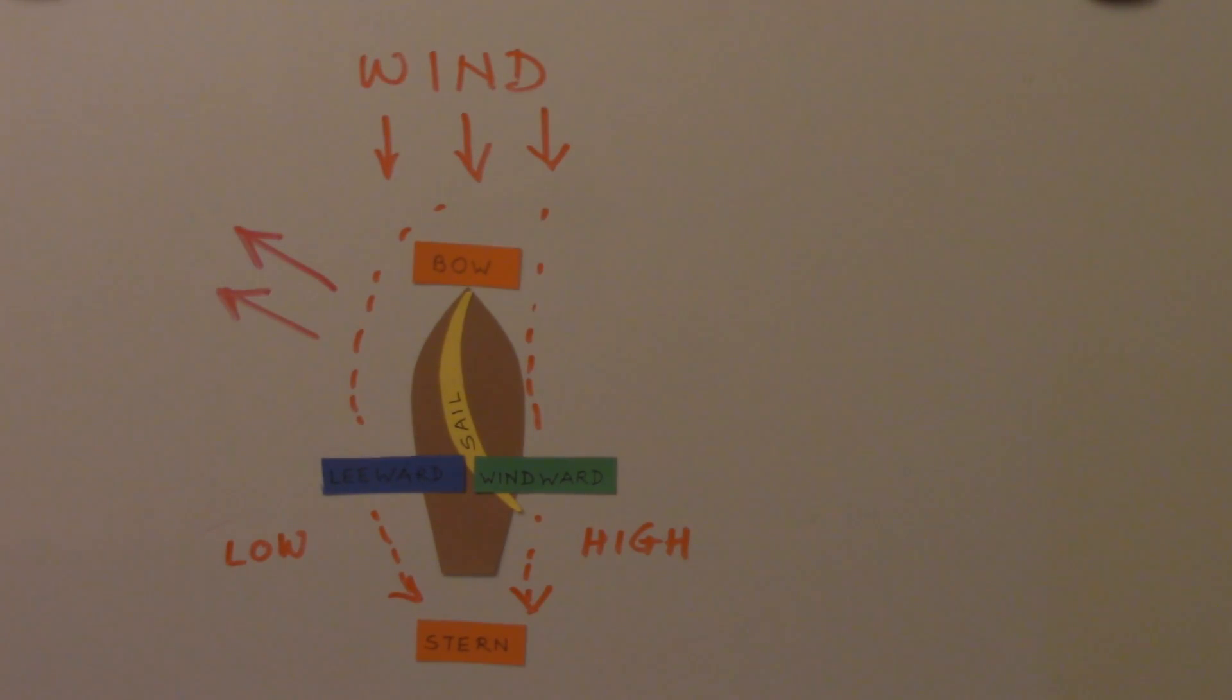However, on the bottom of the sailboat, underwater, is the keel. The keel counteracts the sideways motion and balances the sailboat. Therefore, the sideways forward motion is turned into just forward motion, thanks to the keel.